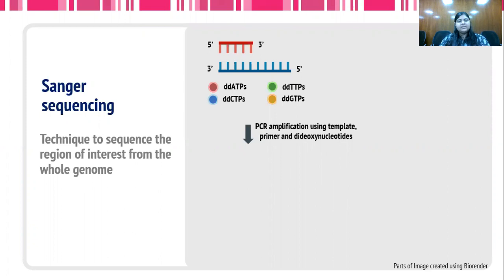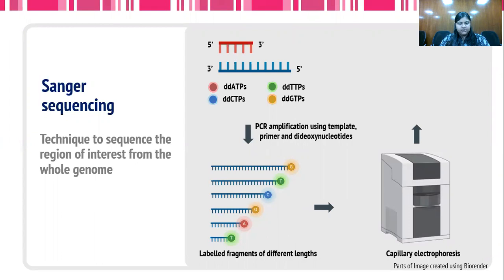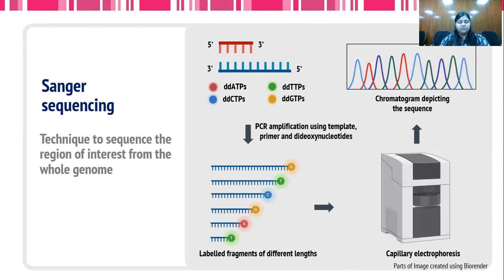This principle is utilized in Sanger sequencing. After PCR amplification, there are different size fragments produced — certain fragments would be stopped at a smaller size based upon the sequence, and certain fragments would be stopped at a larger size. We can differentiate between the sizes of these fragments using a sensitive capillary electrophoresis technique, and the results are observed in the form of a chromatogram which depicts the sequence of the target region.